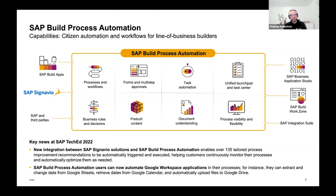Sometimes you also need task automation — certain manual steps where people are typing data or behaving like a robot. That's always a sign it's better to let a bot do the task for you, and that is what we provide with the task automation capability. Combined with this is the area of document understanding, where you can extract information from different types of documents and include that information meaningfully in the flow of your process.